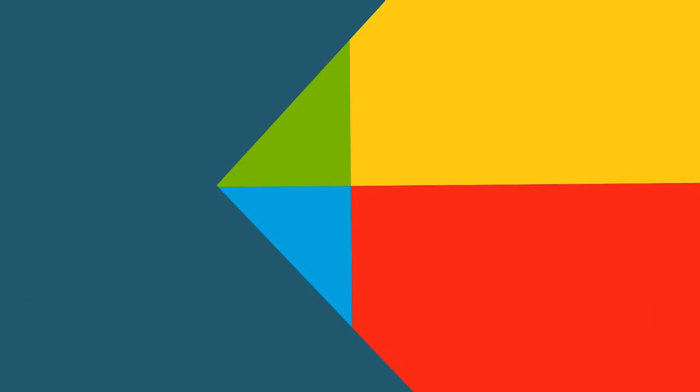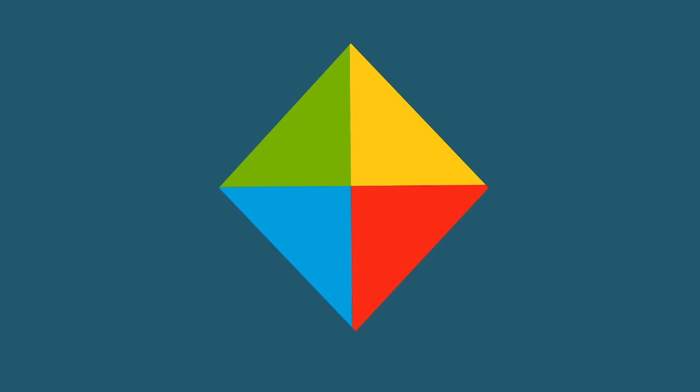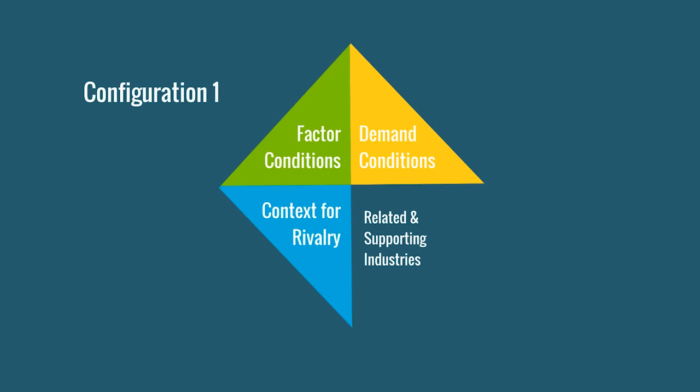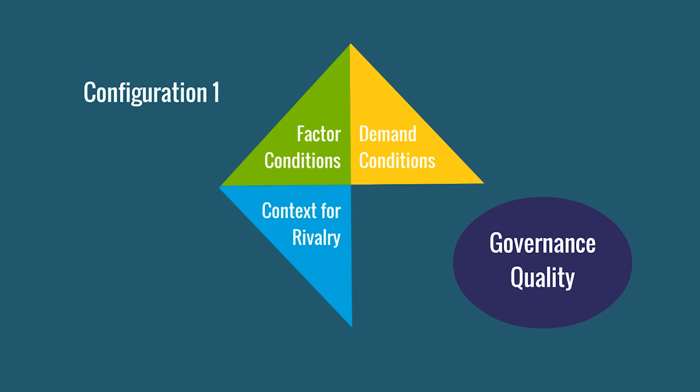Configuration one contains three of the four elements of the diamond model. Only related and supporting industries is missing. Governance quality is part of this configuration as well.